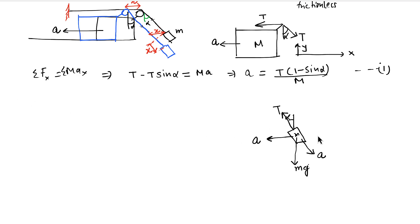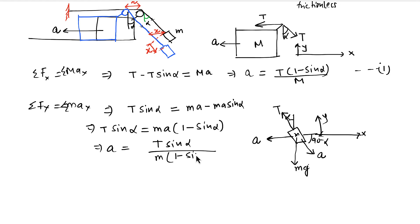Now here also, we have x in this direction and y in this direction. So we can apply Fx equal to small mass Ax. And that will give me T sine alpha equal to MA minus MA sine alpha, because this angle is also 90 minus alpha. Therefore, T sine alpha is equal to MA(1 minus sine alpha). And therefore, A is equal to T sine alpha by M(1 minus sine alpha).